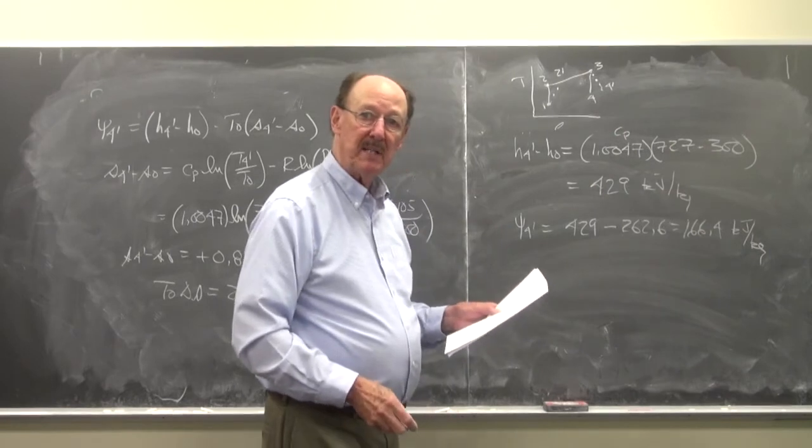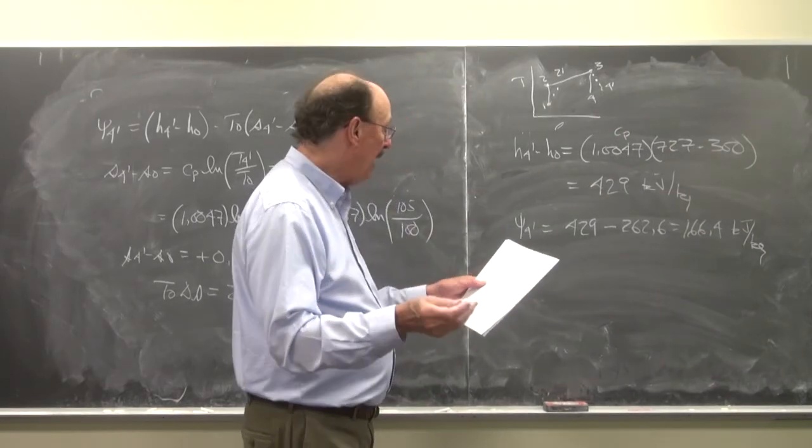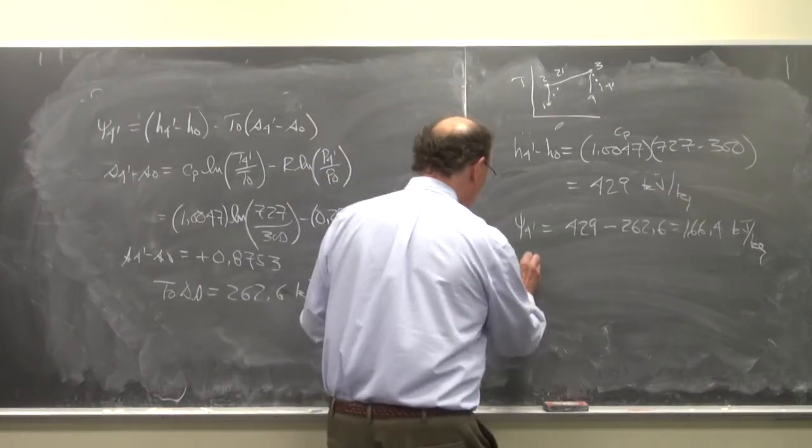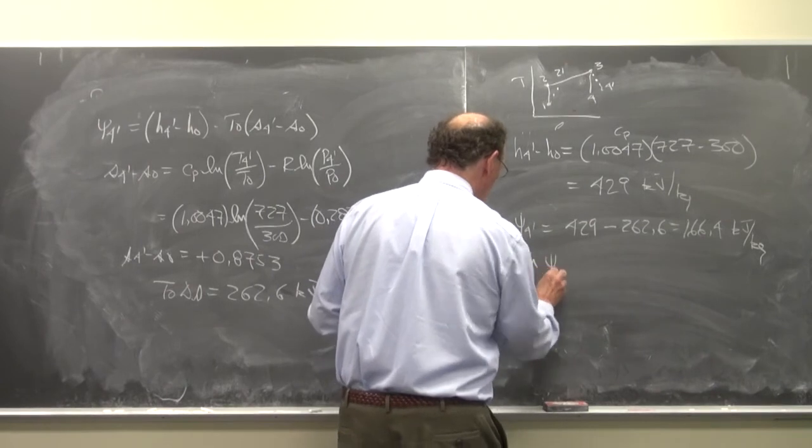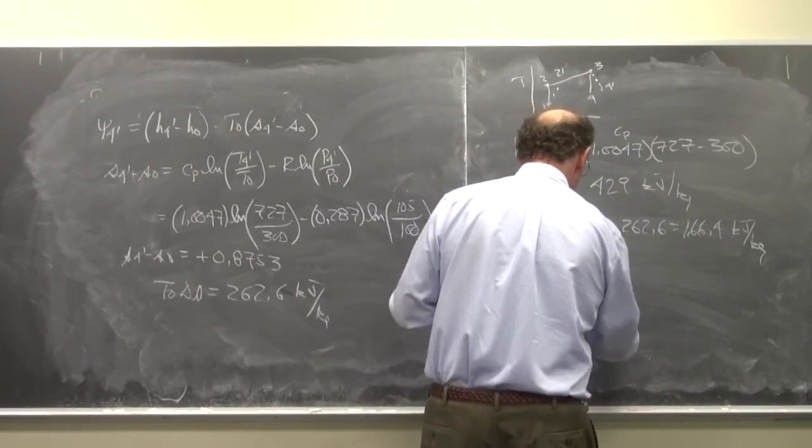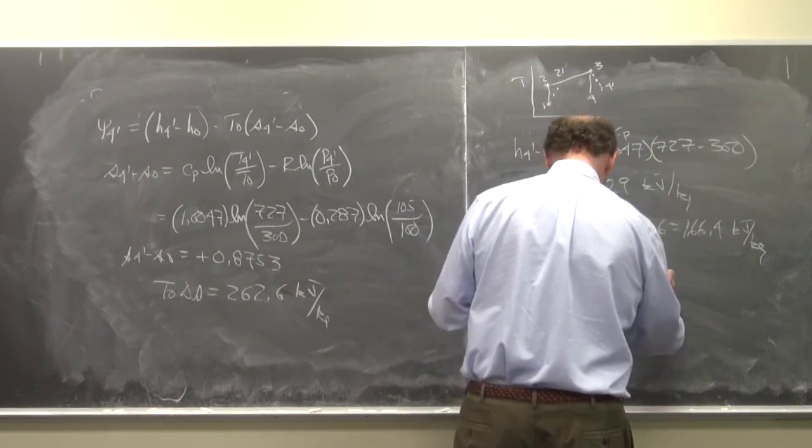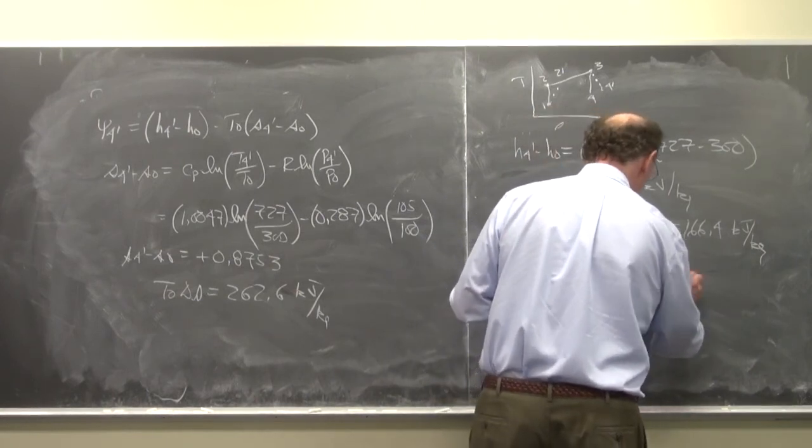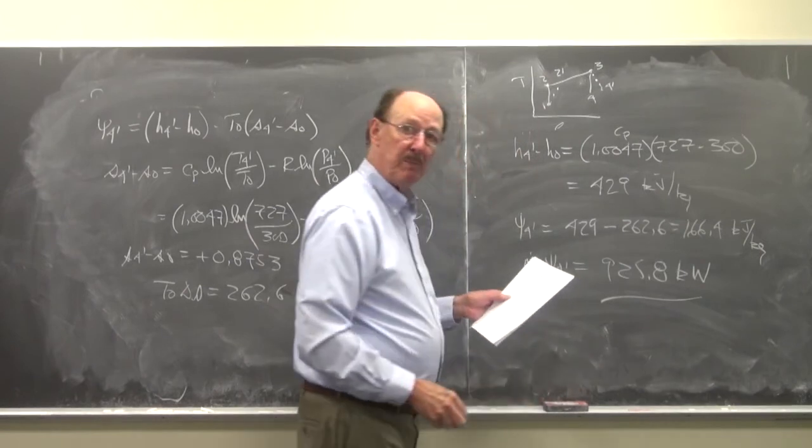So Psi 4 prime is equal to 429 minus 262.6 is equal to 166.4 kilojoules per kilogram. So that's the work potential. And now just M dot times Psi 4 prime is going to be equal to 925.8 kilowatts. So that's the work potential leaving.